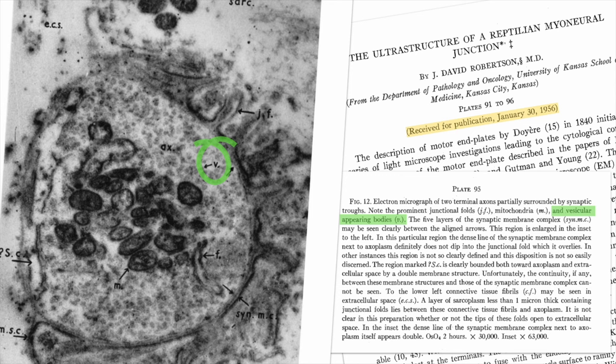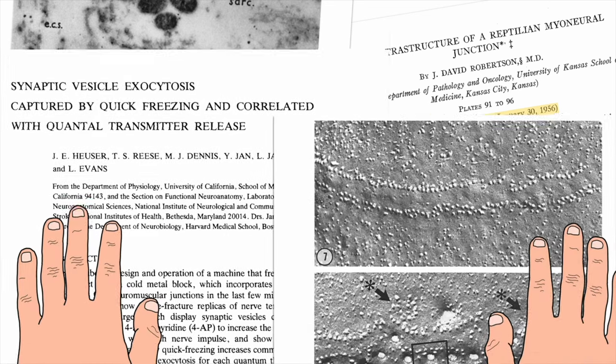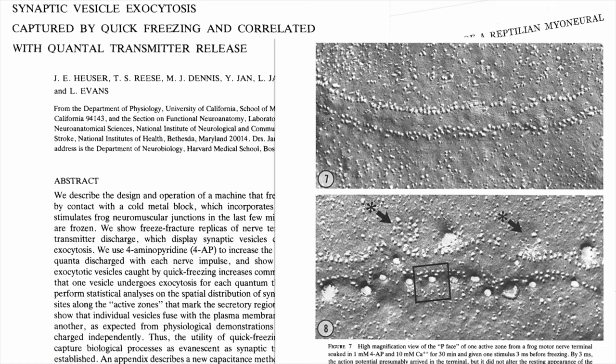Subsequent studies have shown that vesicles indeed contain neurotransmitters such as acetylcholine. To support the hypothesis from Katz, pioneering research using electron microscopy technology was made by John Heuser and Thomas Reese. In their 1979 paper, the team provided experimental evidence that the quanta were indeed vesicles, and they also showed images of exocytosis at the neuromuscular junction of frogs.